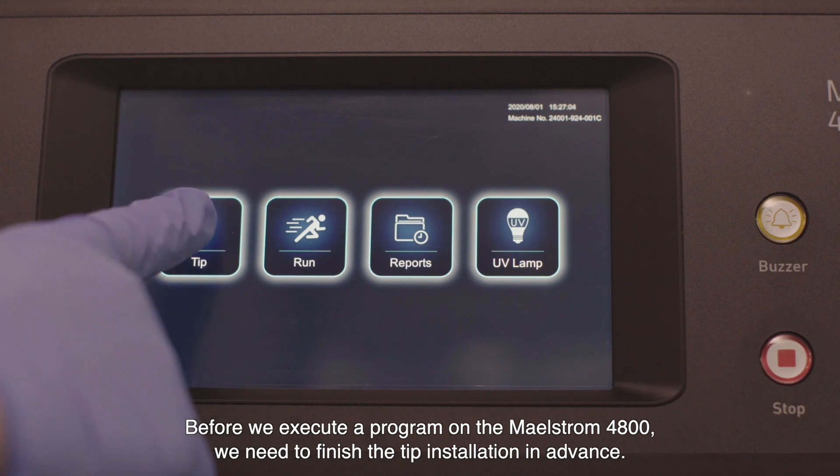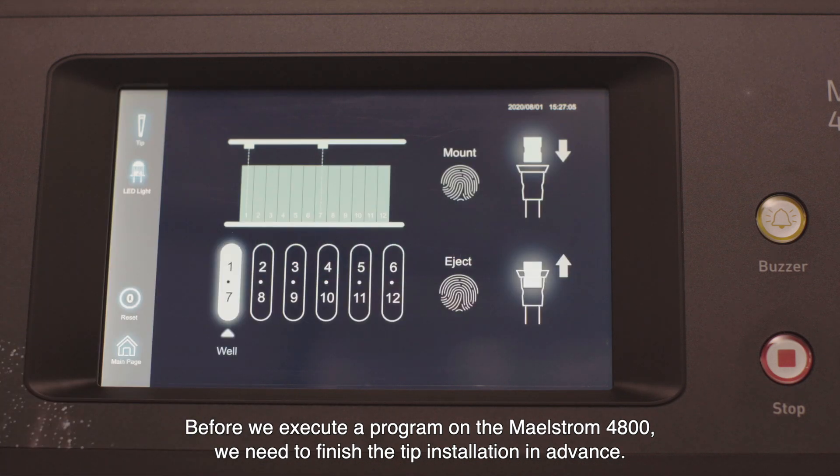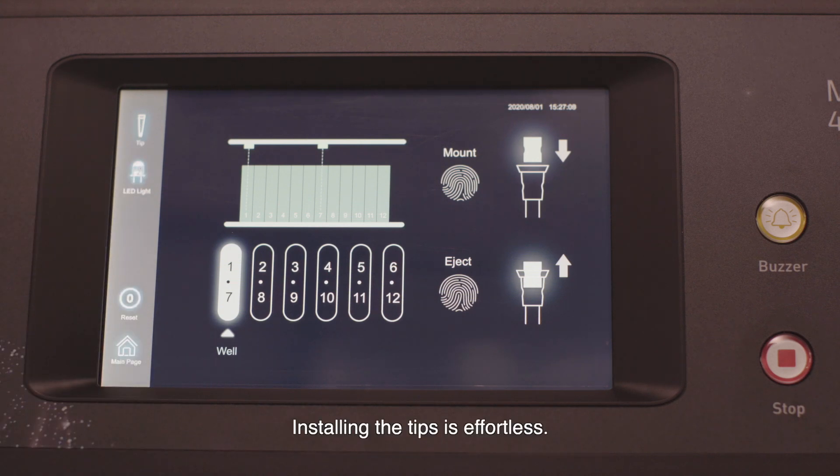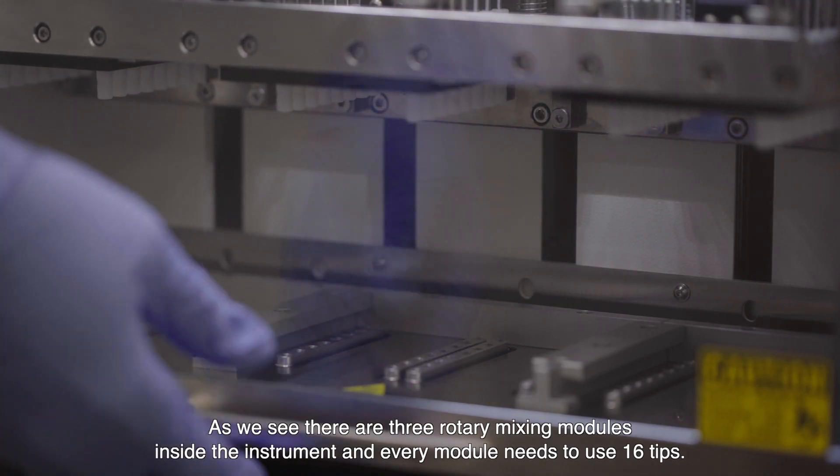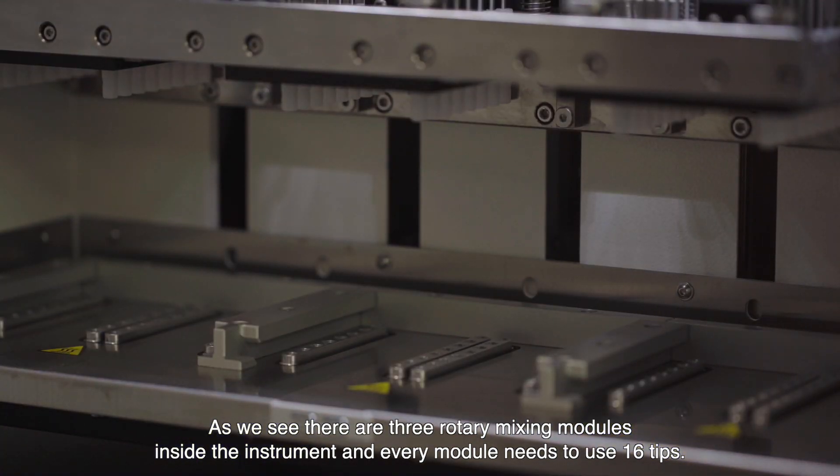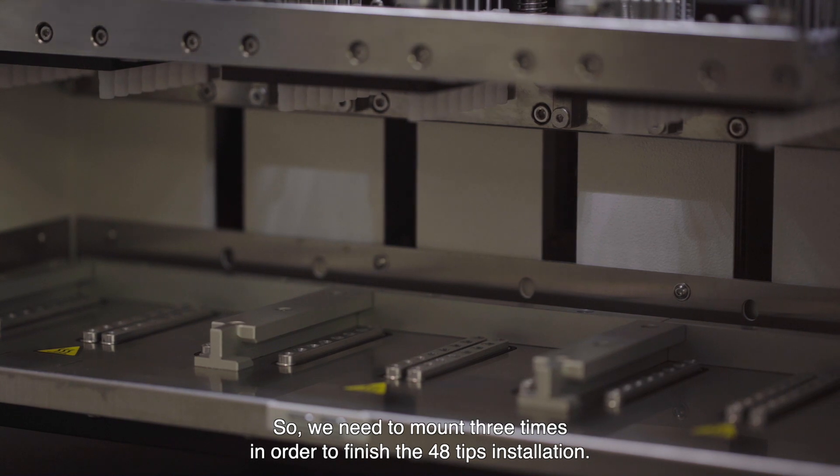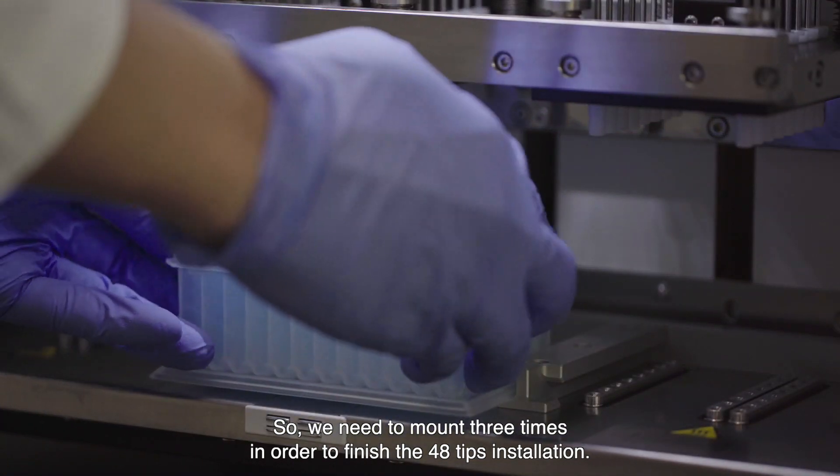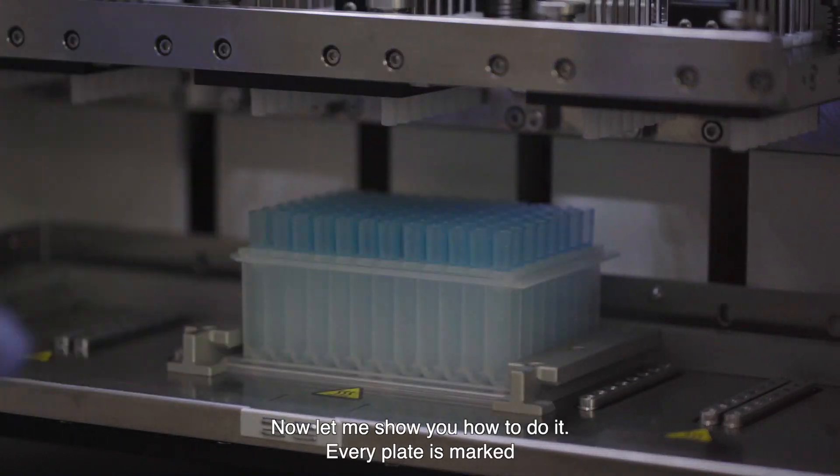Before we execute a program on the Maelstrom 4800, we need to finish the tip installation in advance. Installing the tips is effortless. There are three rotary mixing modules inside the instrument and every module needs to use 16 tips. So we need to mount three times in order to finish the 48 tip installation. Now let me show you how to do it.